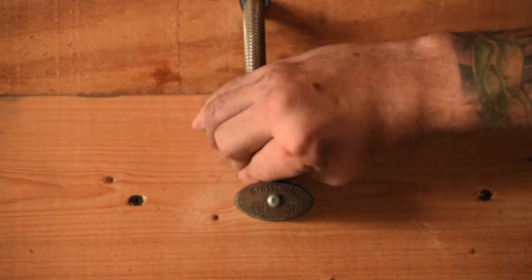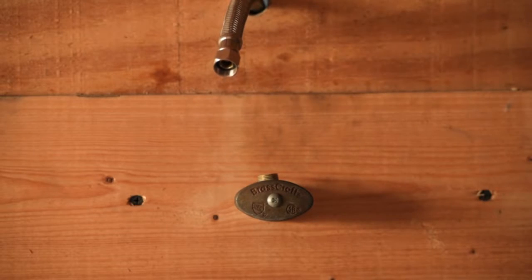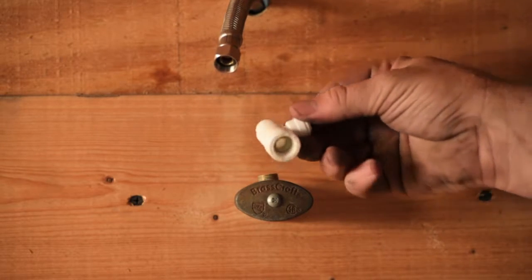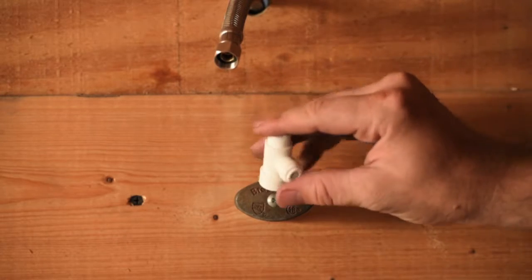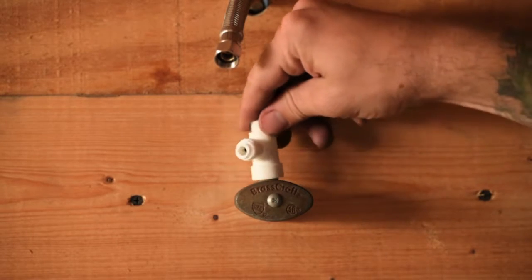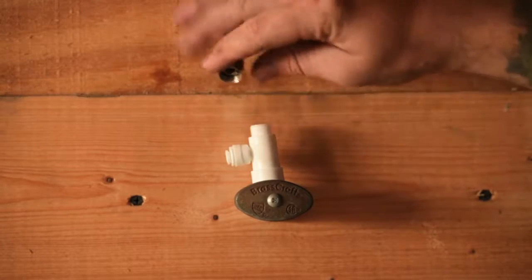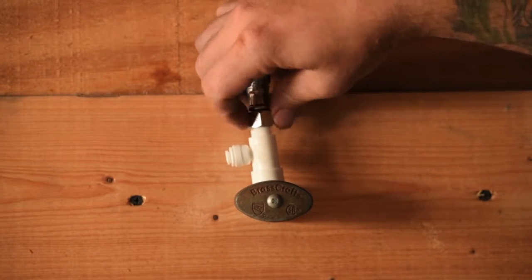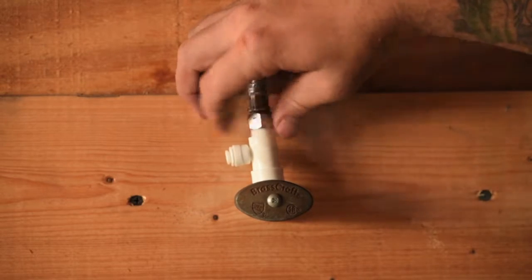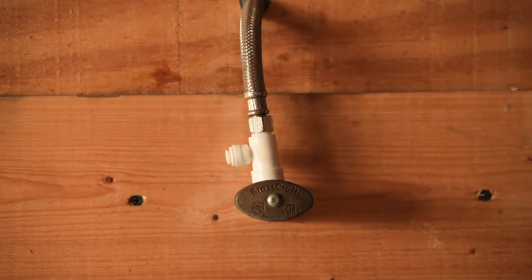Unscrew the braided line from the stop and then thread on the tee. Then secure the braided line to the top of the tee. This way the water will continue up to the kitchen faucet with the tee going off to the reverse osmosis.